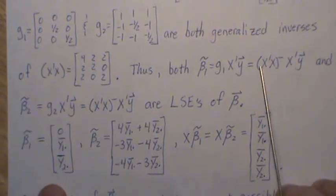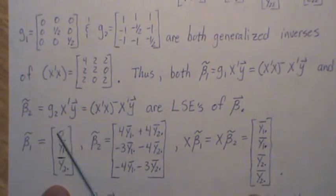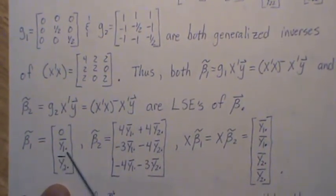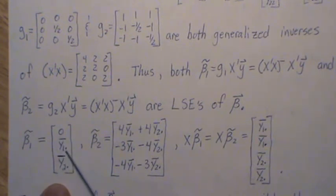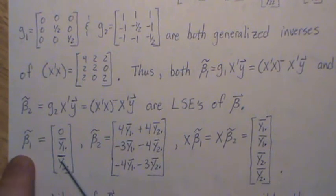We can solve this, and we get this, it's zero in the first component, y1 dot bar, which is the mean for group one, and then we have the mean for group two. So that's the least squares estimate for beta.